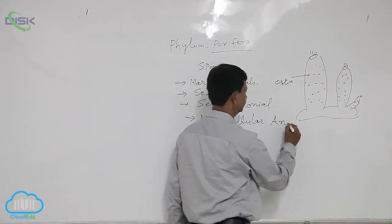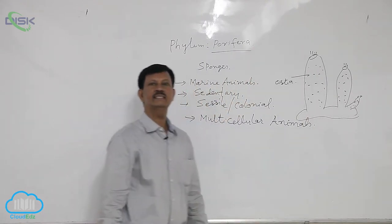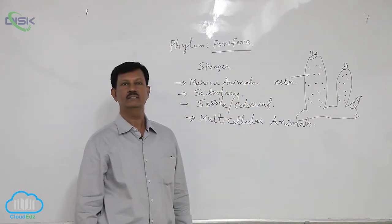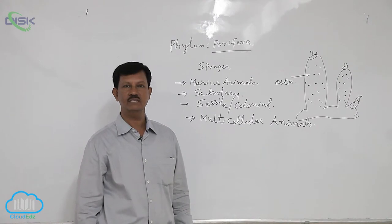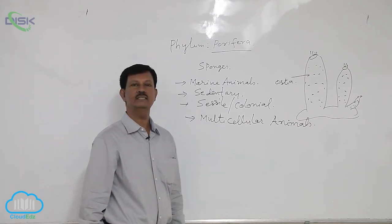They are the first multicellular animals. Many cells are present in the body but no coordination between one cell to another cell. That is why they are known as the primitive multicellular animals.